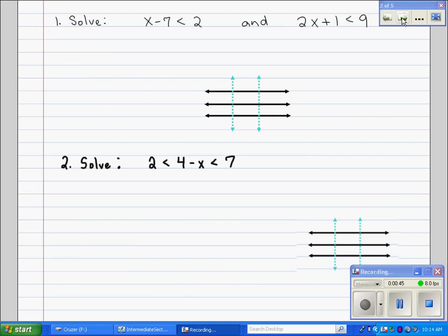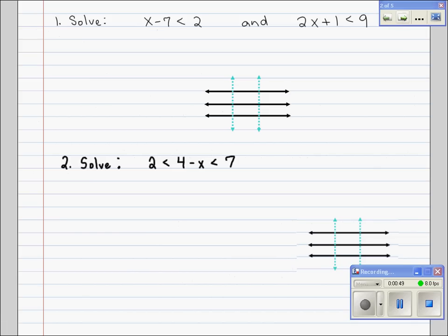We're going to begin by solving each inequality as we normally would. Add 7 to both sides, x is less than 9. On the right, we're going to solve this inequality by subtracting 1. And we get 2x is less than 8. Continue, divide both sides by 2. And we solve and get x is less than 4.